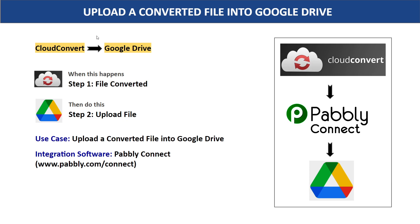In this video we will learn how to upload a converted file into Google Drive. Imagine you are using CloudConvert to convert a PNG file to JPG, or any other file format. After these files are converted, you upload them into Google Drive for backup or safekeeping. If you find this process tedious, you can bring in automation so that whenever a file is converted in CloudConvert, it is automatically uploaded to Google Drive.